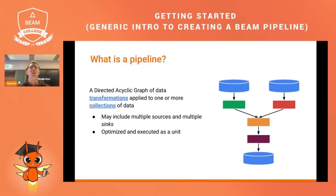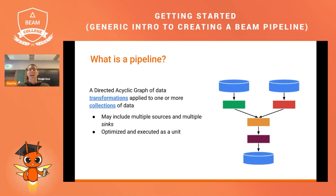Whenever we talk about Apache Beam we often talk about data pipelines. A data pipeline is represented as a graph of steps connected to each other. The data flows through the pipeline from one step to the next, being transformed along the way. Each step within the pipeline is a self-contained unit of work that takes one or multiple inputs and produces one or multiple outputs. Those transformations can use built-in transforms for filtering, mapping, or grouping data, or you can define your own based on your business requirements.